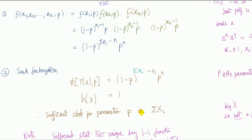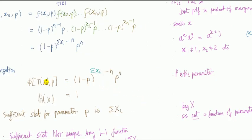So the sufficient statistic for parameter p is the sum of the x_i's. Just a few comments. Let's go back up here again. We know p is the parameter, which is why I was looking for the split between the function of the parameter and just the x's only.